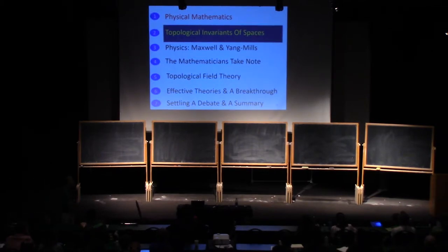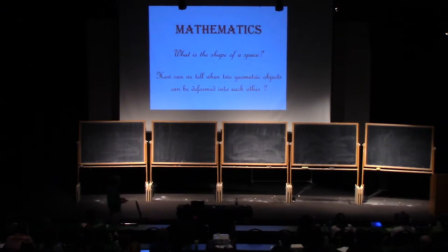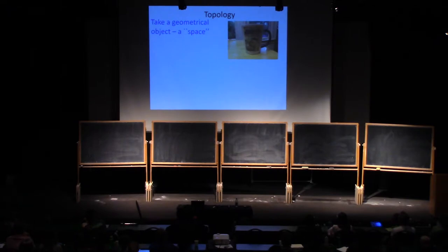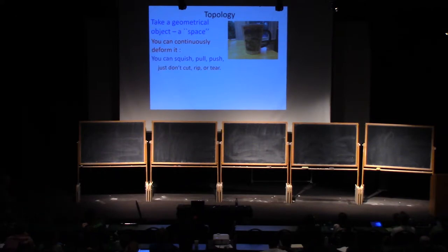Let's begin with the mathematics question. That's a question about a topic called topology. Take a geometrical object, I'll just call it a space—for the experts I'm talking about a compact-oriented Hausdorff manifold—like the surface of a coffee cup. Imagine that this coffee cup is made of malleable material, so you can continuously deform it. You can squish, push, and pull, but you can't cut, rip, or tear.